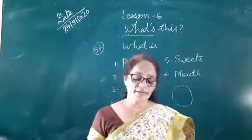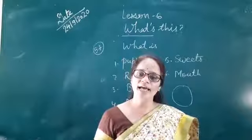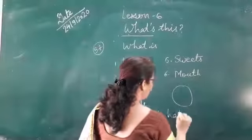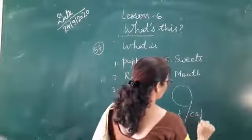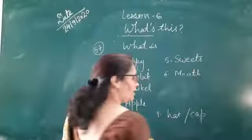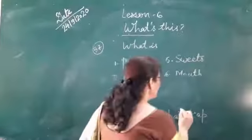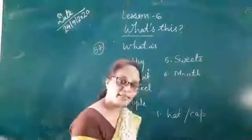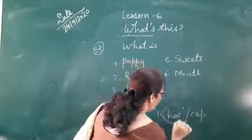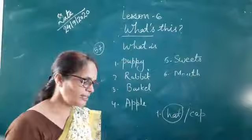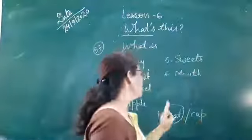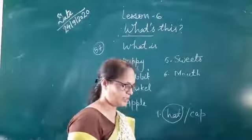There is a rabbit in the hat or cat. Read the first sentence. There is a rabbit in the hat or cat. There is a rabbit in the hat. So you will circle the hat. There is a rabbit in the hat. Done?